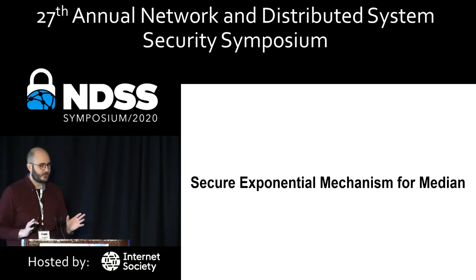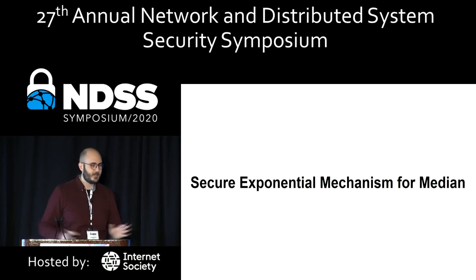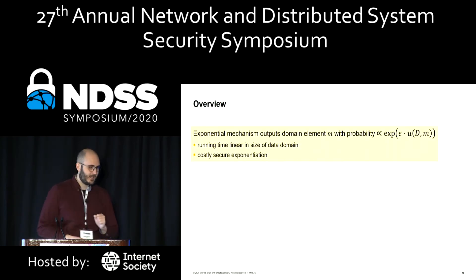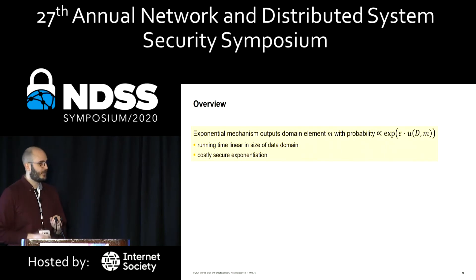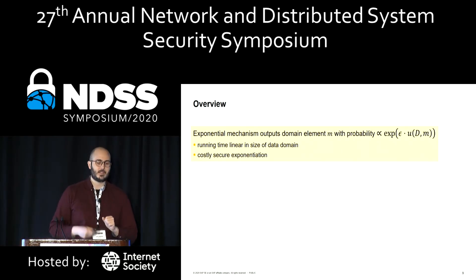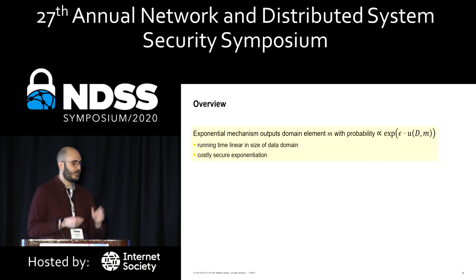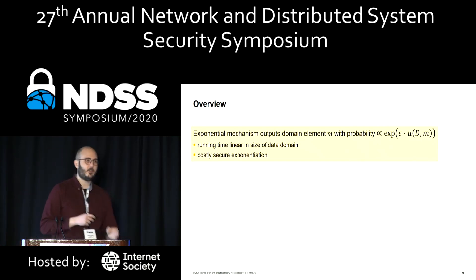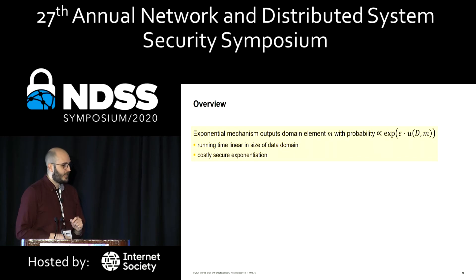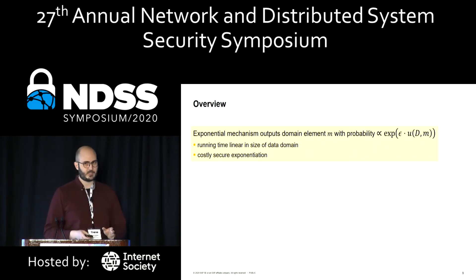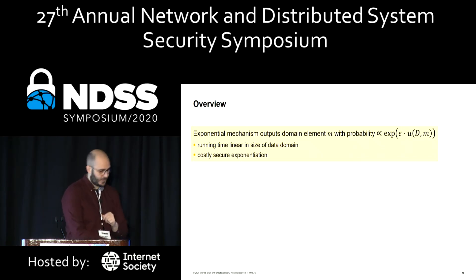Now we can perform the secure exponential mechanism for the median. As a reminder, the exponential mechanism outputs an element from the domain with probability proportional to E evaluated for epsilon and some utility value. Running time is linear in the size of the data domain, and straightforwardly it would require costly secure exponentiation. So how do we change it? If you have a large data domain, we use sorted data instead.